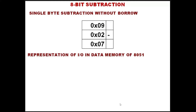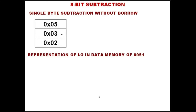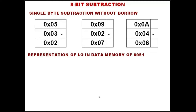We always represent numbers in hexadecimal — 0x denotes hexadecimal. So 0x09 means hexadecimal 9, 0x02 means hexadecimal 2, and 9 minus 2 is 7. In the memory layout, 9 is stored in the 20th memory location, 2 is stored in the 21st, and the result 7 is stored in the 22nd. We have three examples: 5 minus 3 is 2, 9 minus 2 is 7, and A minus 4 is 6 — we use A to denote it as a hexadecimal number.